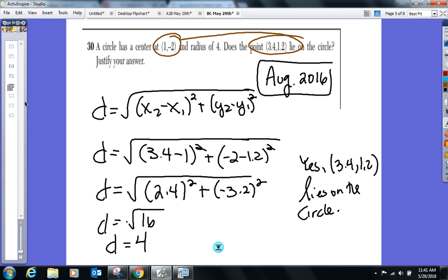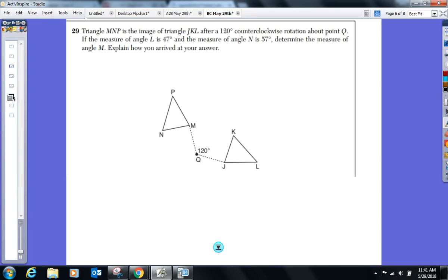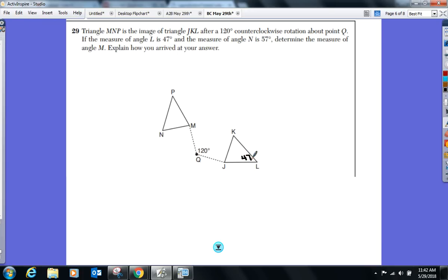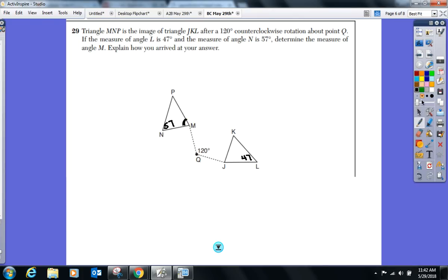Questions there? We can fit one more in, I think. Number 29. MNP is the image of JKL after 120° rotation around point Q. Measure of angle L is 47°. Measure of angle N is 57°. Determine the measure of angle M.